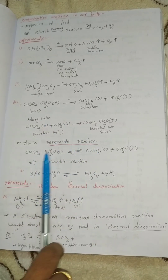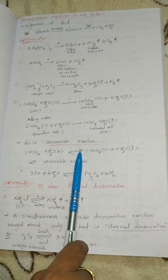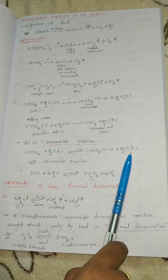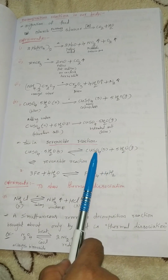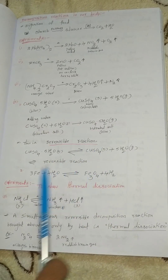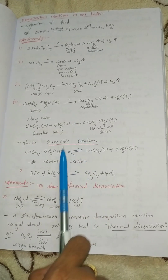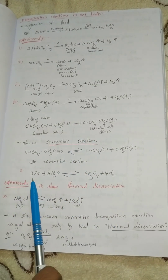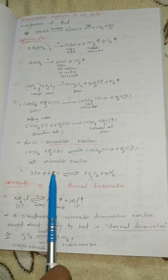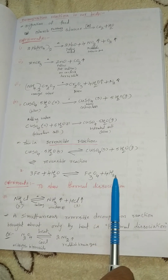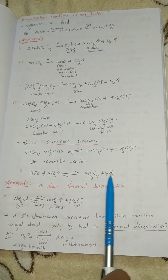In the reverse reaction, CuSO4 combines with 5H2O to form CuSO4·5H2O again. Next: Fe plus H2O gives Fe3O4 plus H2.